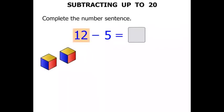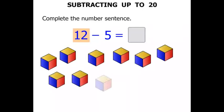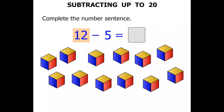12 to start with. 1, 2, 3, 4, 5, 6, 7, 8, 9, 10, 11, 12. We have 12 blocks there. Now we are taking away 5, subtracting 5. Let's get rid of 5.